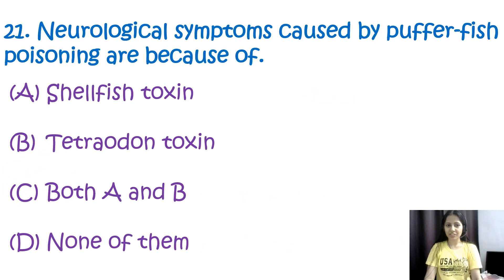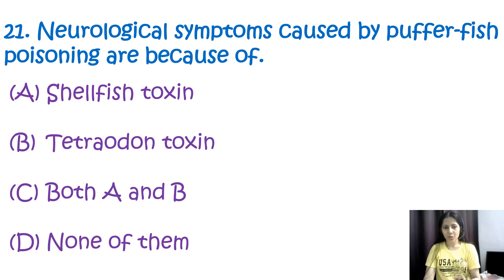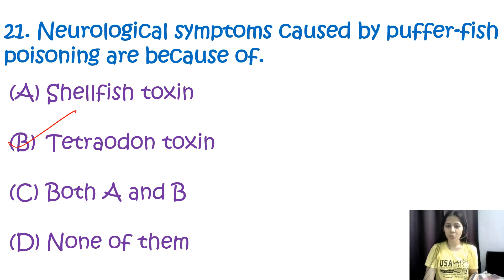Question number twenty-one: neurological symptoms caused by puffer fish poisoning are because of — options are shellfish toxins, tetrodotoxin, both A and B, or none of them. The correct option is B, tetrodotoxin.